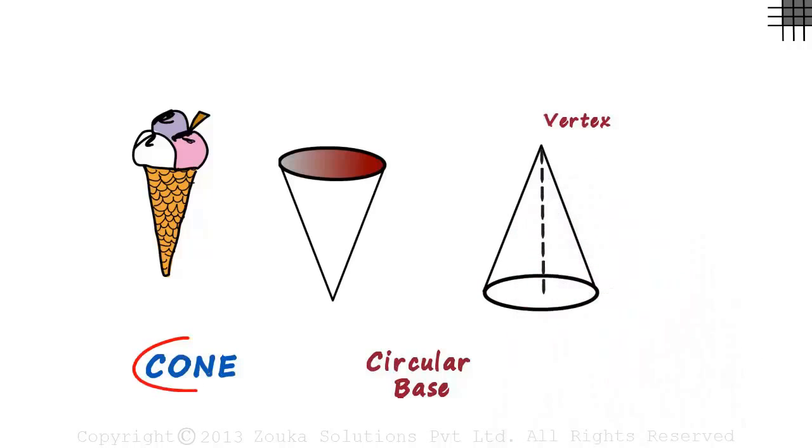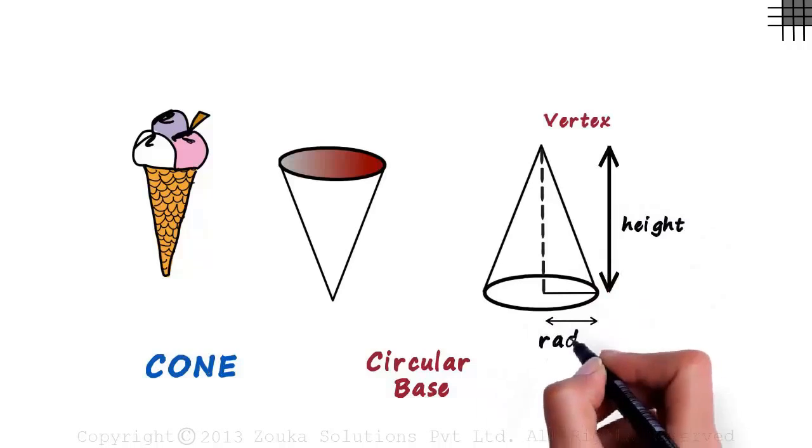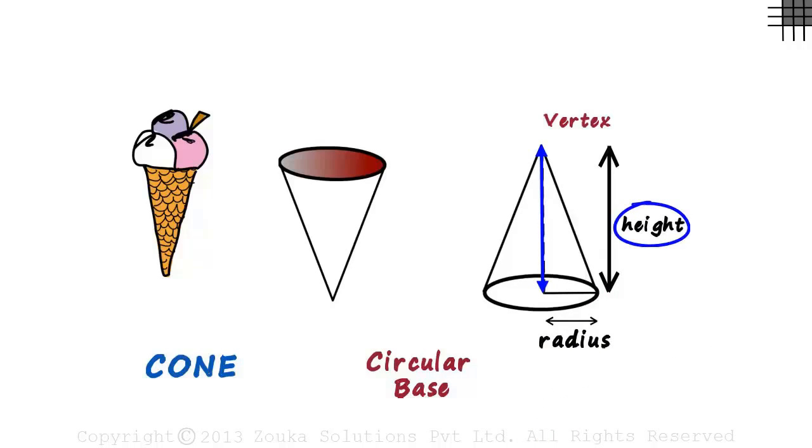The next thing we need to know is how a cone is defined. A cone is defined by two parameters. First, its height and second, the radius of its circular base. This length will be the height and this length will be the radius of the circular base.